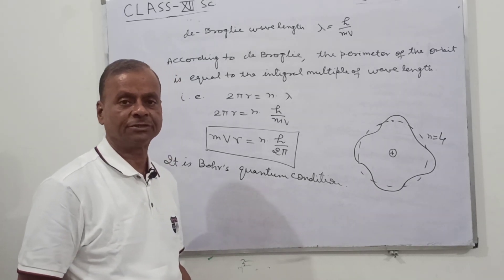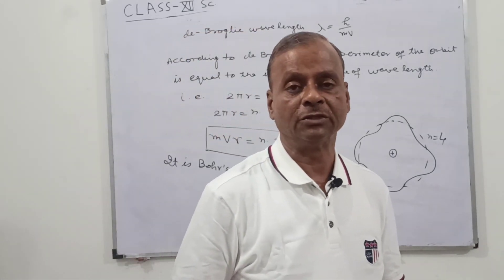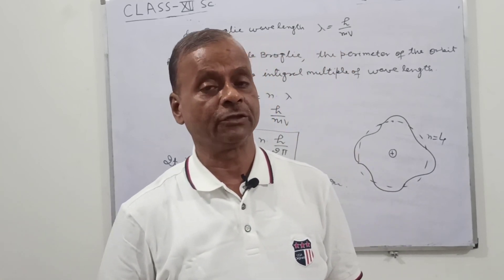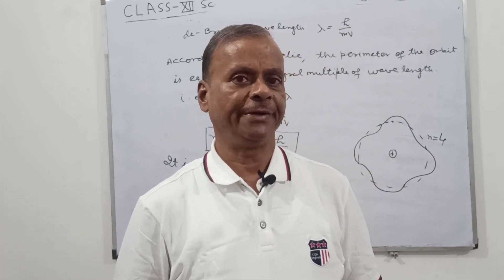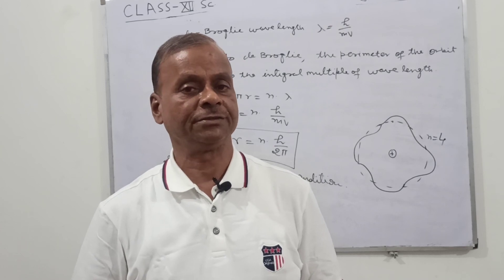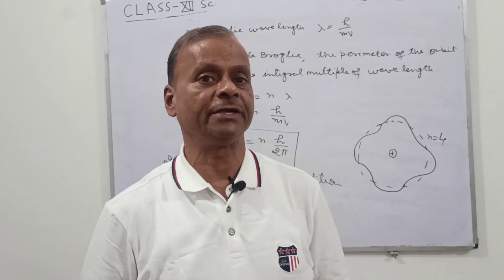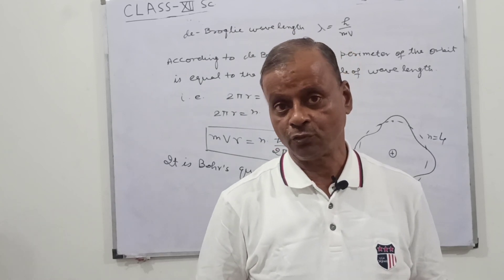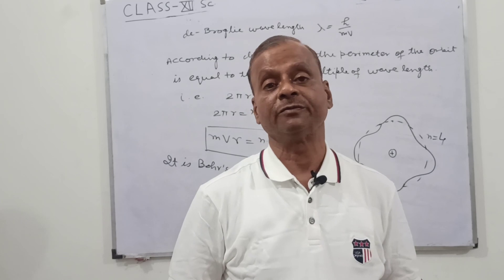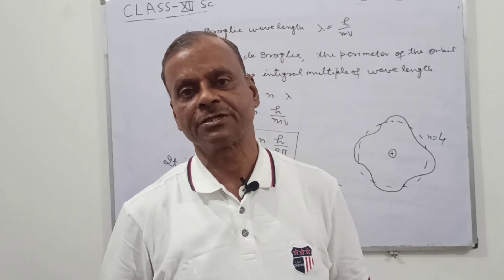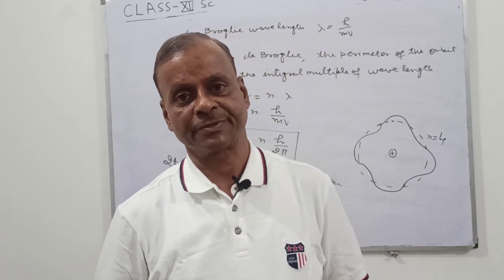So this is the key point. At that time there was no proof of Bohr's quantum condition. But when the idea of matter waves was given by de Broglie, it could be proved that there must be stationary waves associated with the electron moving around the nucleus, and the circumference of the orbit must be equal to the integral multiple of the wavelength. Using the de Broglie hypothesis, this quantum condition could be proved easily. Please like, share, and subscribe to the video. Thank you.